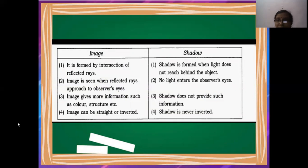Now, the difference between the image and the shadow. Image forms by the intersection of reflecting rays. When the reflecting rays intersect with each other, the image is formed. But shadow is formed when light is blocked by the object. Image is seen when reflected rays approach the observer's eyes. When rays reflect from the object and reach our eyes, we see the image.